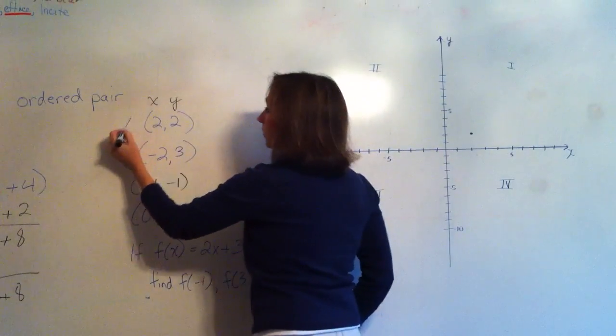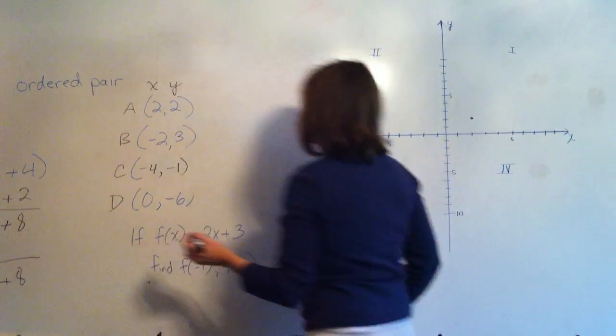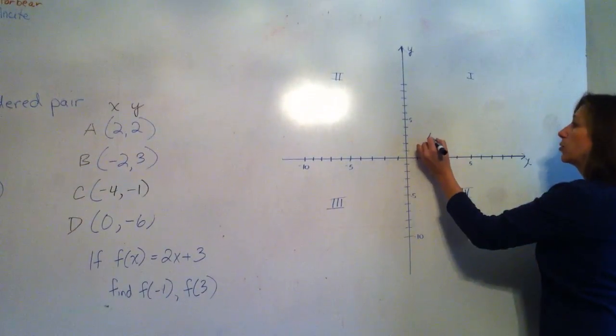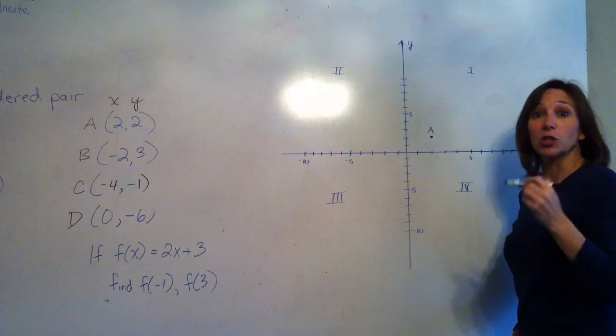And it's nice if these are labeled. We'll call them A, B, C, D. And that way we can label this point A, and we know it refers back to our coordinates of (2, 2).